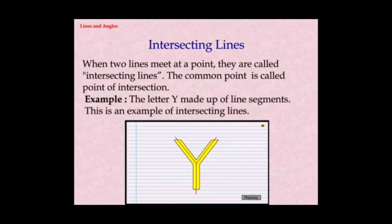The next concept is intersecting lines. When two lines meet at a point, they are called intersecting lines. The common point is called the point of intersection. The letter Y, made up of line segments, is an example of intersecting lines.